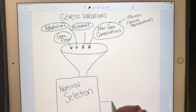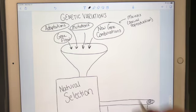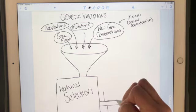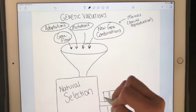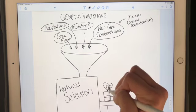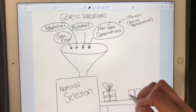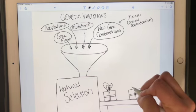And what you're left with, or what's going to come out on this conveyor belt here, what you're left with after natural selection has acted on the genetic variations are two main possibilities.